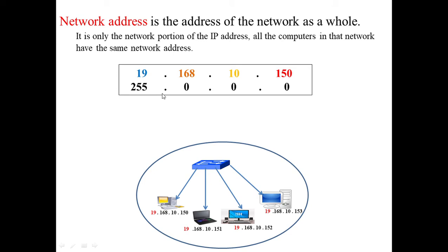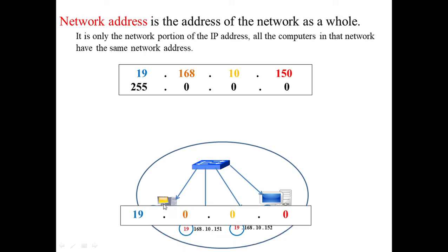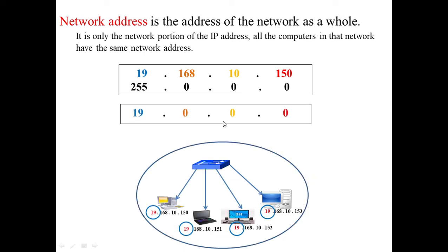To find the network address of any IP address, we need to convert all the host portion bits to zero, and only the network portion is kept. For example, for a Class A IP address with a default mask of 255.0.0.0, the first byte represents the network and the remaining bytes represent the host. Setting those host bytes to zero gives us the network address — for example, 19.0.0.0 is the network address.